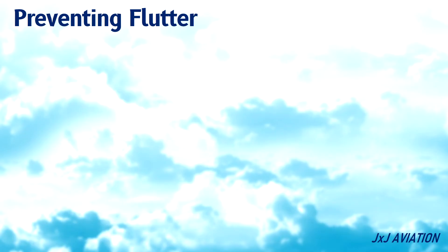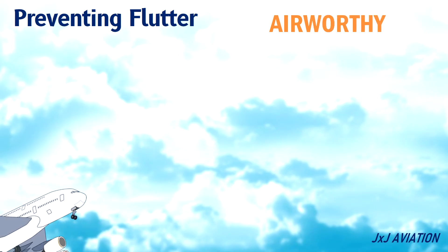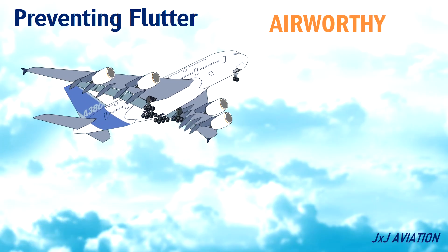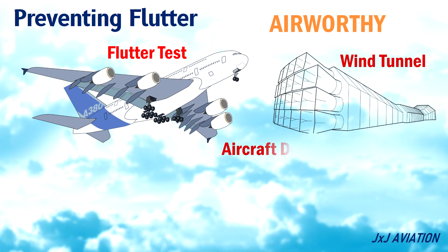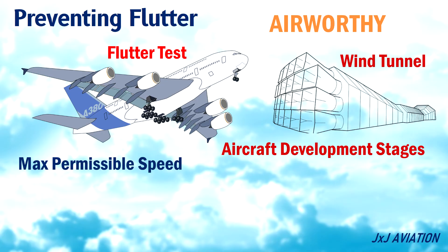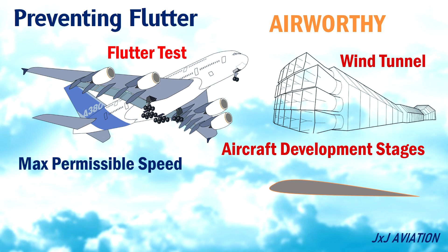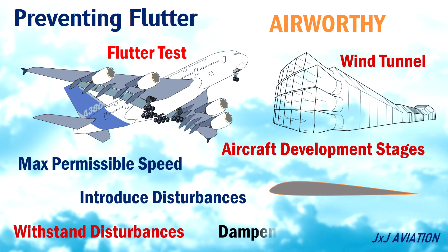For an aircraft to be certified as airworthy, a flutter test is carried out in a wind tunnel during the initial aircraft development stages. The conditions will be similar to the aircraft flying at its maximum permissible speed, and disturbances are introduced to the airflow. The structure should be able to withstand the disturbances and dampen the vibrations.